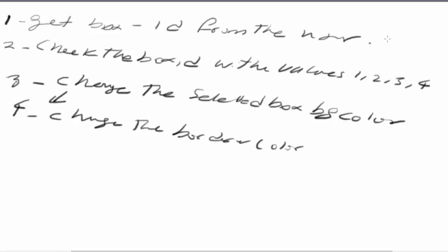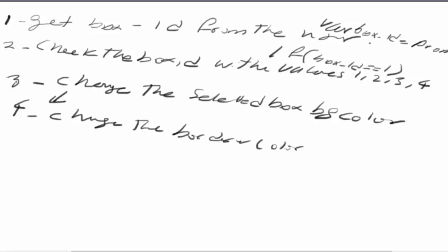For the very first step, I know that if I want to get something from the user, I have to create a variable — I'll call it boxID — and make it equal to prompt. For the second step, I know I have to use the if statement to compare the boxID with the values. For step three, I have to change the background color, which I don't know how to do yet, so I'll need to figure that out. But it doesn't change anything in my algorithm.